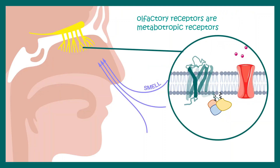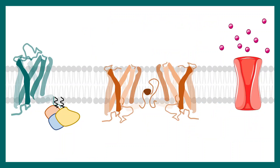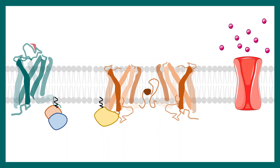Now let's talk about metabotropic receptors. They can also be found in our nervous system, and a common example is olfactory sensory neurons. In these neurons, metabotropic receptors are G-protein coupled receptors that bind to odor molecules, causing a conformational change that allows GTP exchange in the trimeric G-protein. The GTP-bound G-protein then activates adenylate cyclase, an enzyme that converts ATP into cyclic AMP.